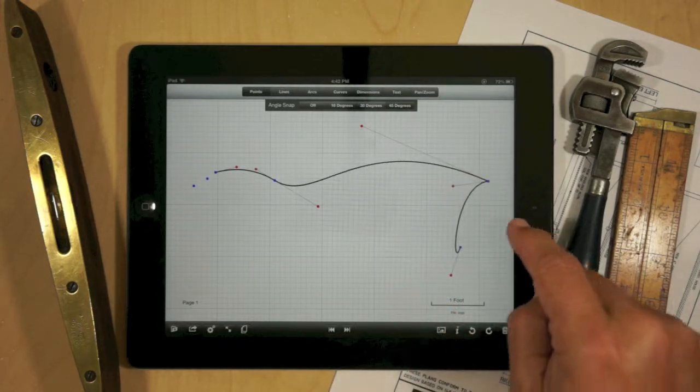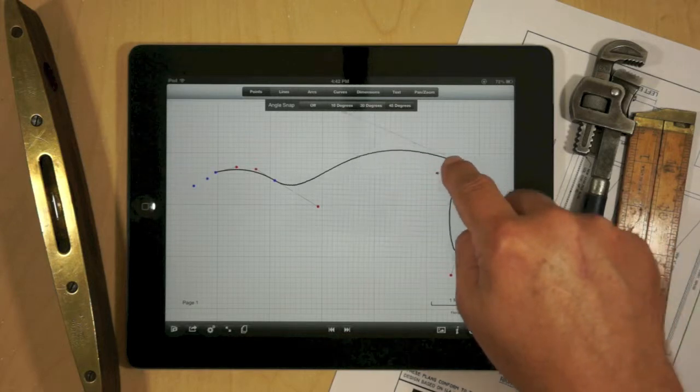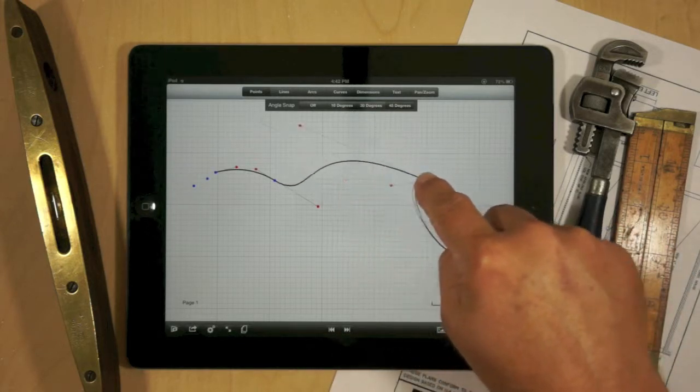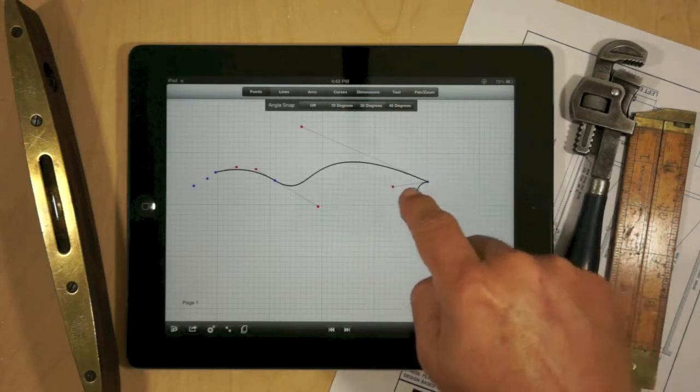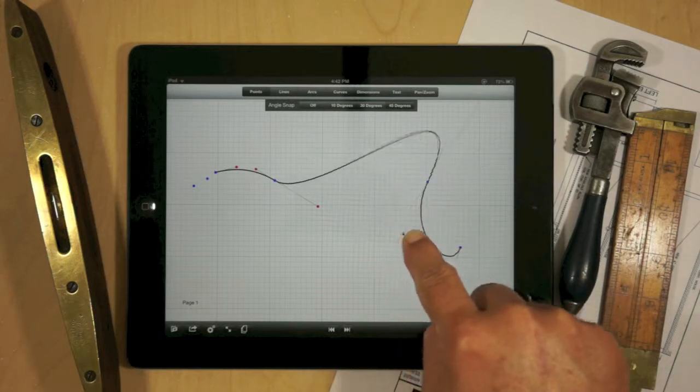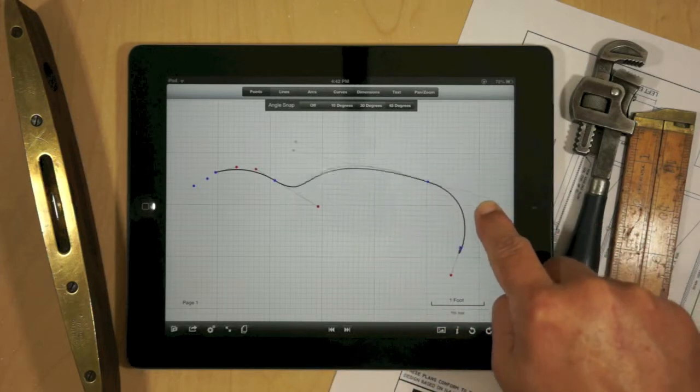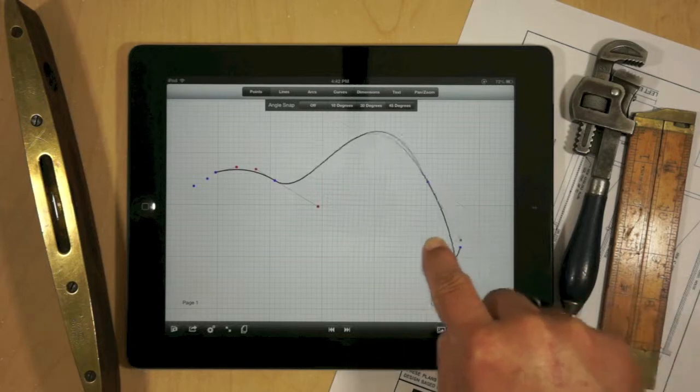Once we've done that, if we grab the center point, then the two control points will move in tandem. However, if you grab a control point, its corresponding control point will move to 180 degrees out.